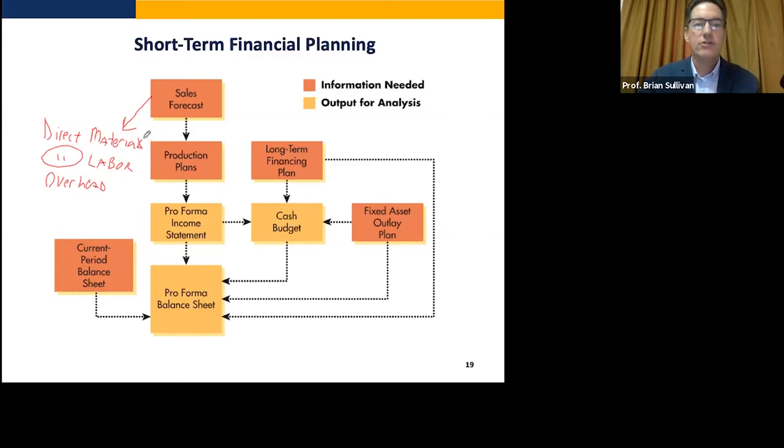So there's actually three different budgets that go into this production plan. And once we have that, we can then develop our income statements.